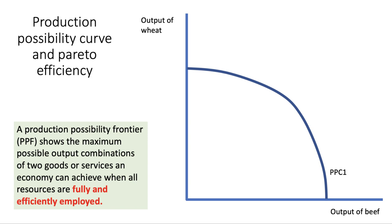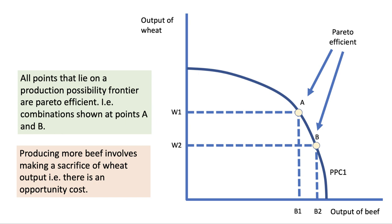Here's a production possibility curve or PPF. It shows the maximum possible output combinations of two goods or services — in this case wheat and beef — that a country can achieve when all factor resources are fully and efficiently employed. Points A and B on the curve are both Pareto efficient.